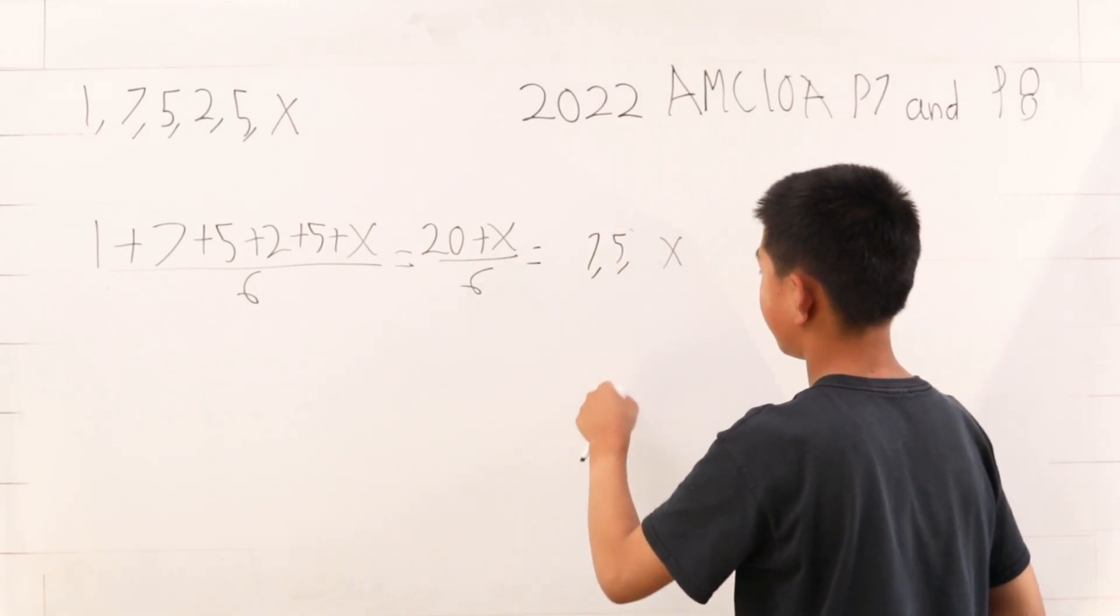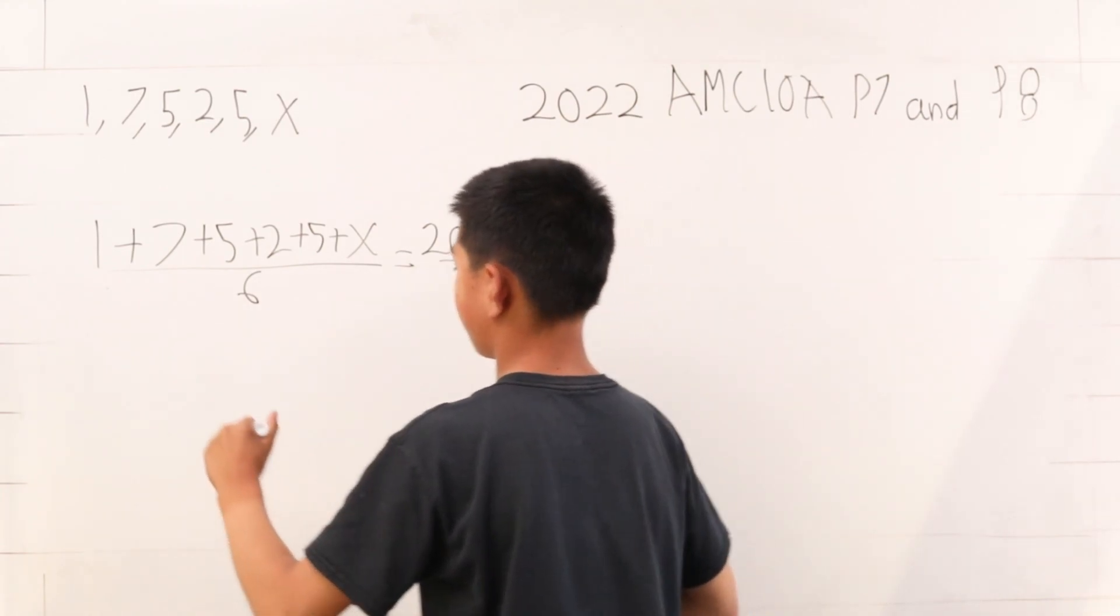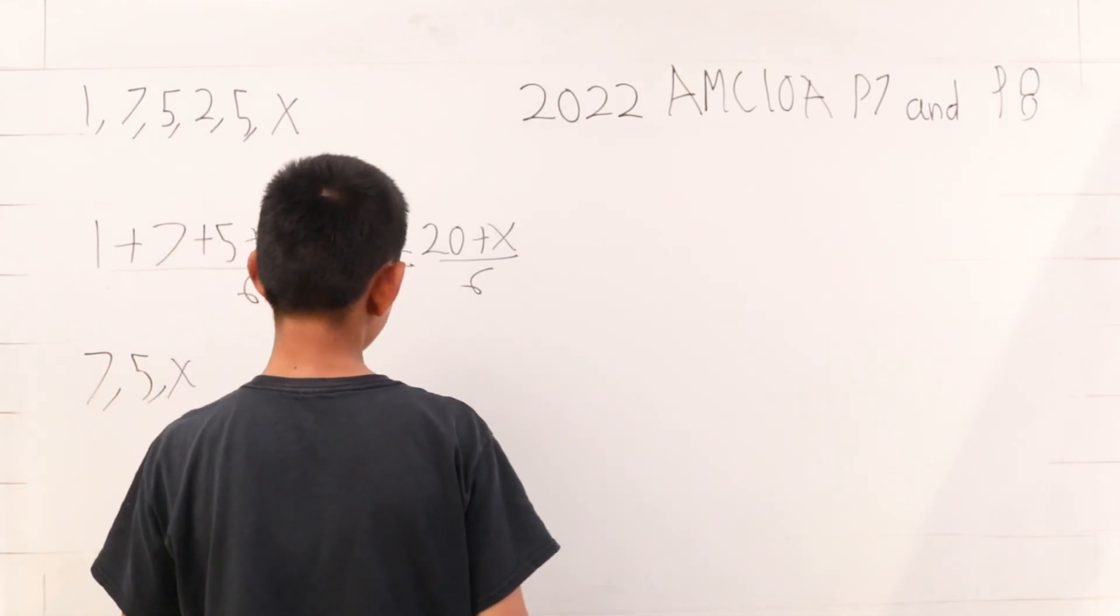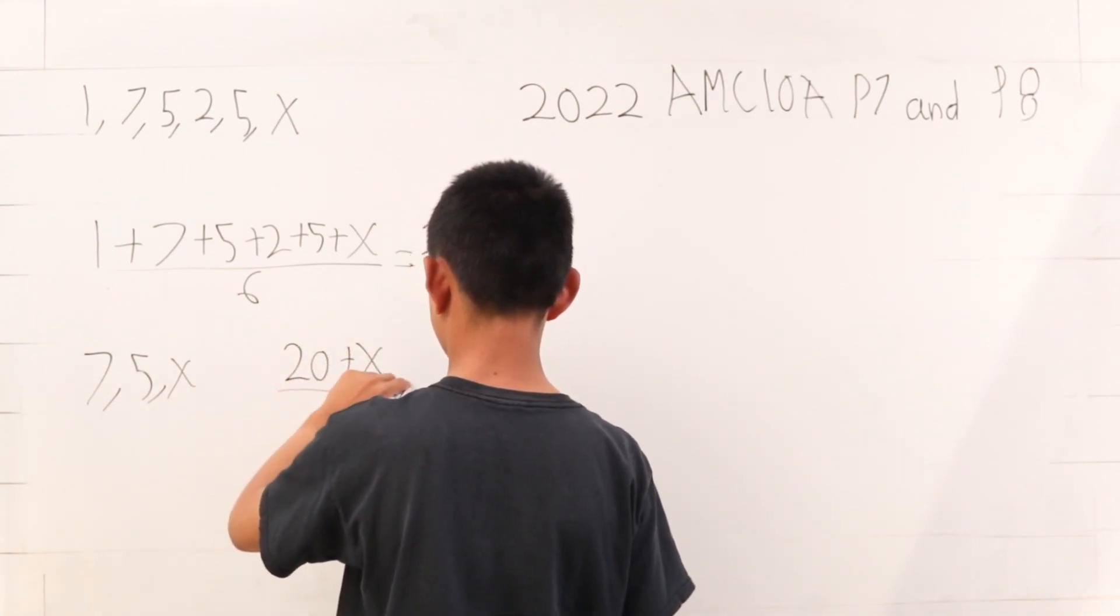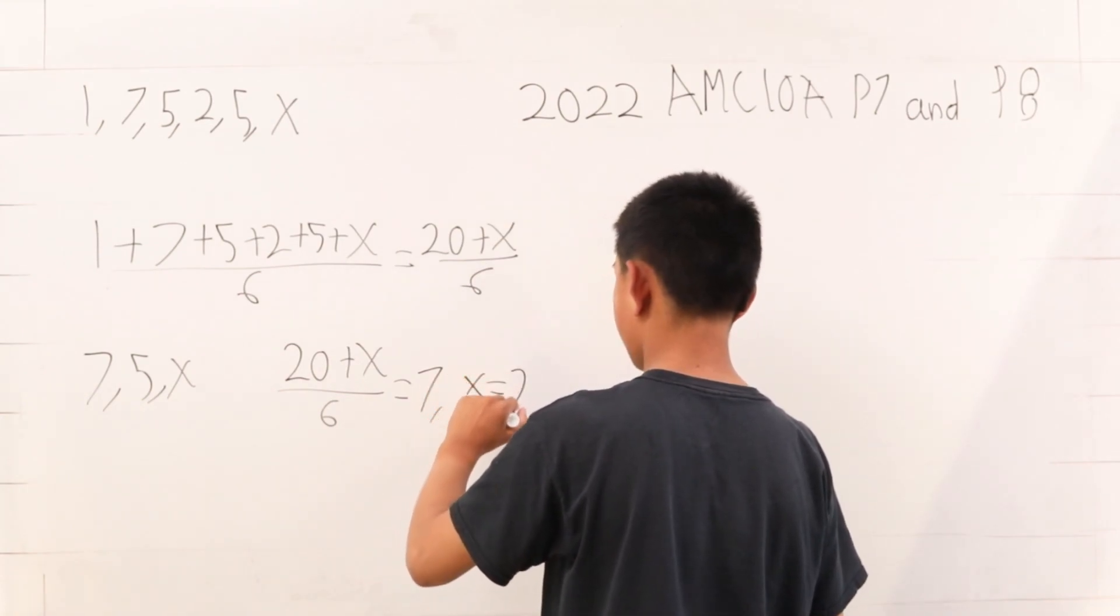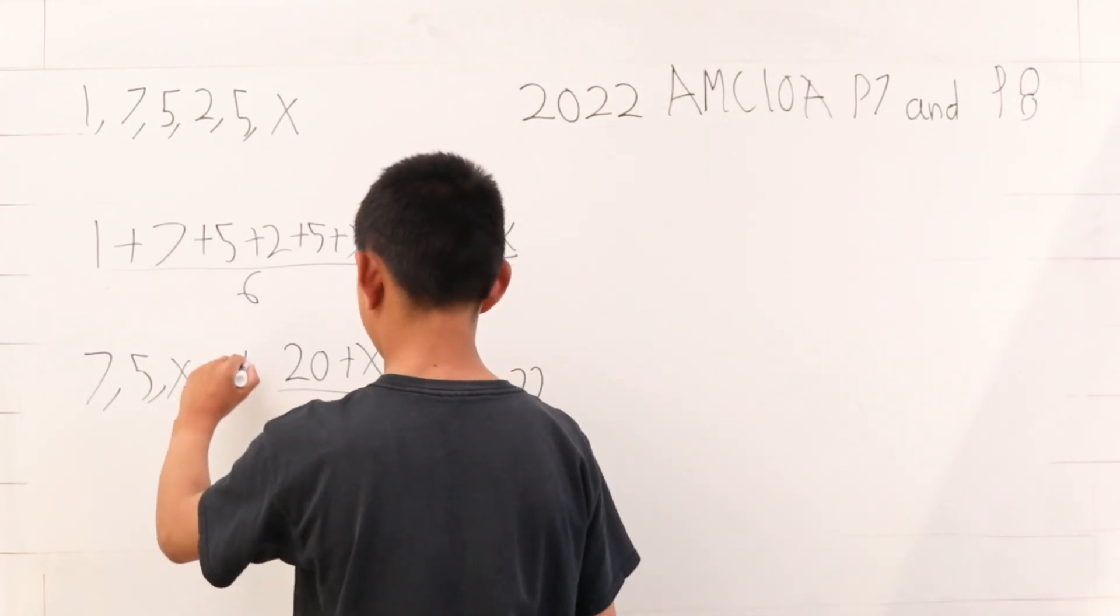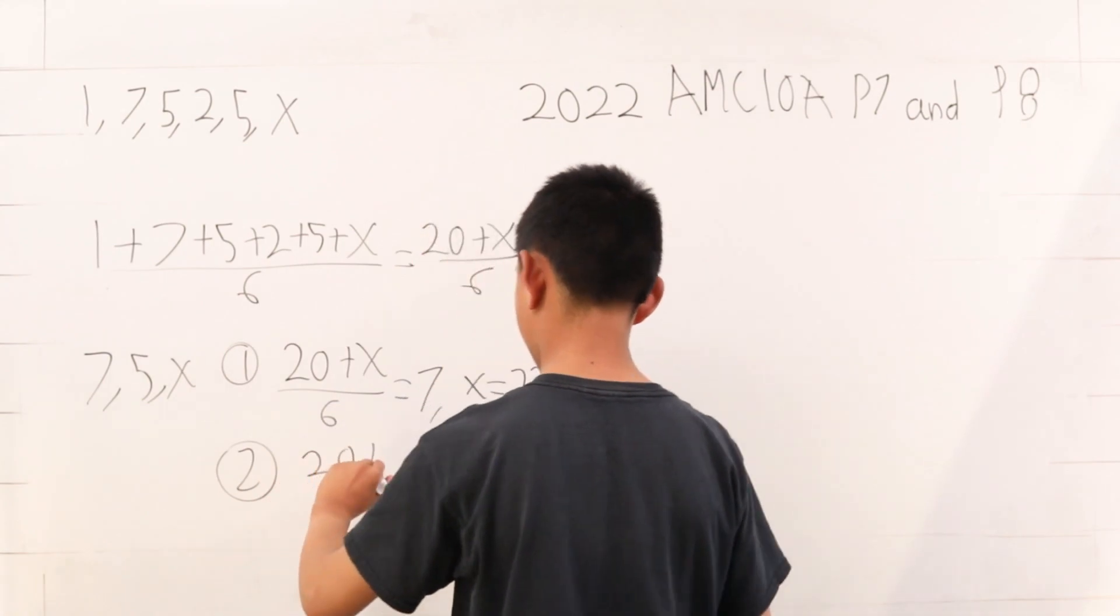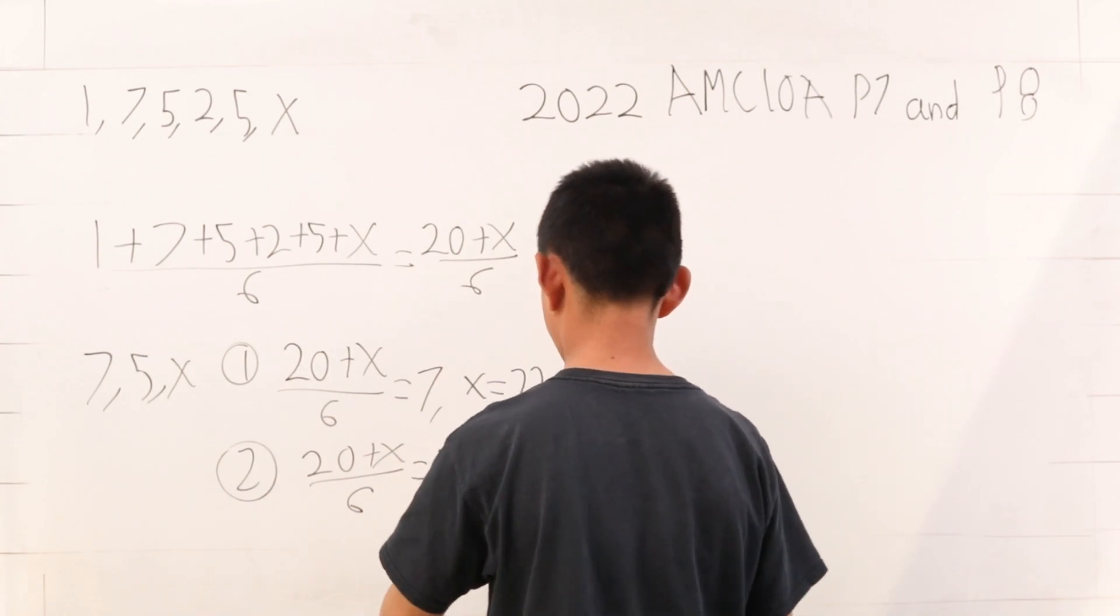Let's consider when this is 7. First, the three values that work probably are 7, 5, and x. Let's consider when 20 plus x over 6 is 7. Then that would mean that x is 22. We have found one value of x here. This is our first case. Second case: when 20 plus x over 6 is equal to 5, then that means x is 10.